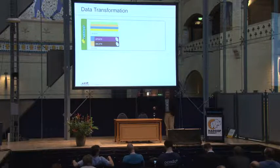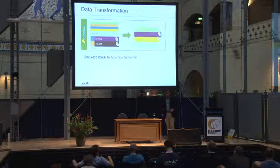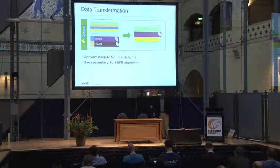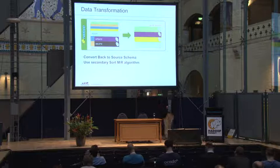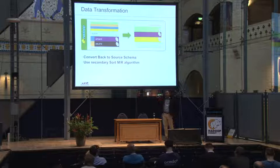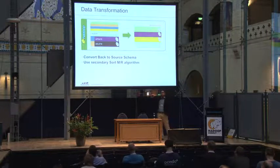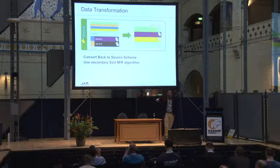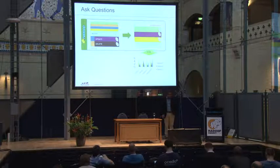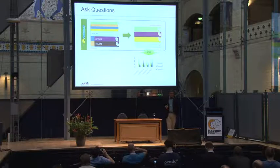Then we do the data transformation. We have all the insert, update, and delete transactions, and we convert them back to the source schema as it was. We use a secondary sort MapReduce algorithm — for every primary key, we sort by primary key with the date timestamp, get the latest record, and put it back. So for every primary key, we're putting the latest time snapshot and recreating the source schema. Then we ask questions directly from that source schema.